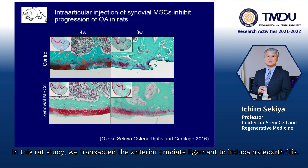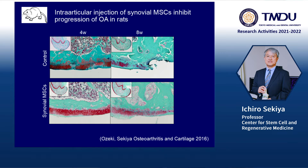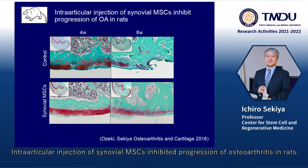In this rat study, we transected the anterior cruciate ligament to induce osteoarthritis. In the control, the femoral cartilage was degenerated. Intraarticular injection of synovial MSCs inhibited progression of osteoarthritis in rats.